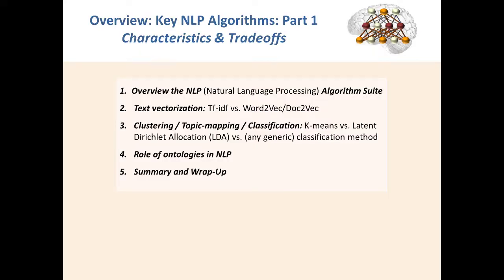This video kicks off a series in which we want to look at some of the key algorithms in natural language processing. In particular, we want to compare some of the classic algorithms, such as term frequency times inverse document frequency, often known as TF-IDF, versus more recent algorithms such as Word2Vec and Doc2Vec. Similarly, we want to compare classic means for decomposing a corpus into clusters versus some of the newer methods like latent Dirichlet allocation for topic mapping. This video presents an overview of the NLP methods that we're going to address in more detail in subsequent vids.